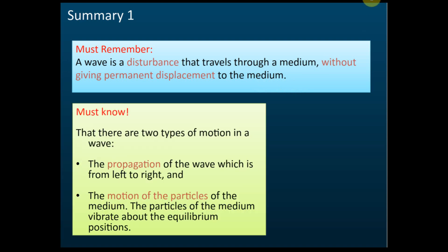For a wave, there are two types of motion. The first is the propagation of the wave — you can see the wave moving from left to right, and that is the propagation of the wave.